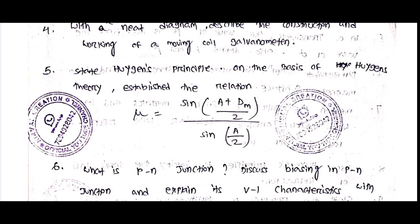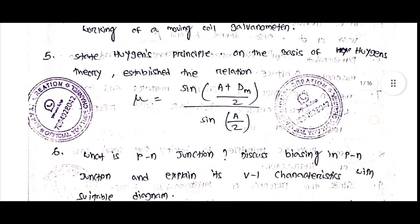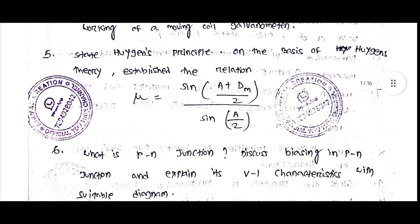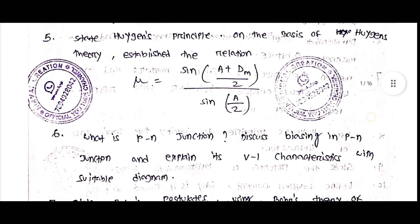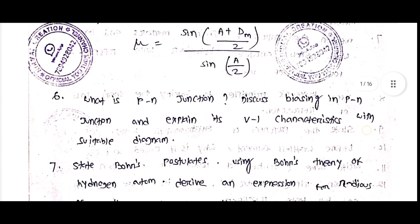Then, you know Huygens' principle. State Huygens' principle on the basis of Huygens' wave theory. Establish the relation: μ = sin((A + δm)/2) / sin(A/2).